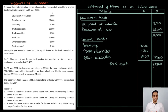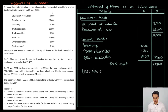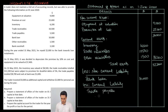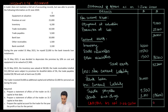Now let's deduct our liabilities. We have one non-current liability, which is the bank loan, and then two current liabilities: trade payables and bank overdraft. After deducting all of these liabilities we can find the capital as on 1st June 2020. We have arrived at our opening capital of 33,600.